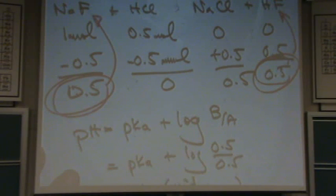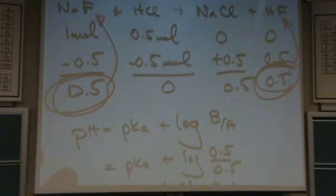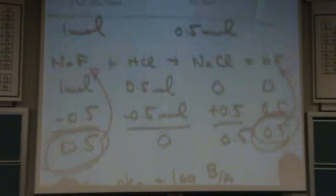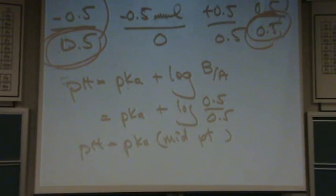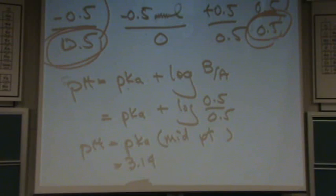It's called the midpoint. The midpoint occurs whenever you have equal amounts of weak base and weak acid. That's the midpoint. pH equals pKa. In this case, pKa is 3.14, and I knew that because the Ka. Oh, I didn't write down the Ka. There we go.